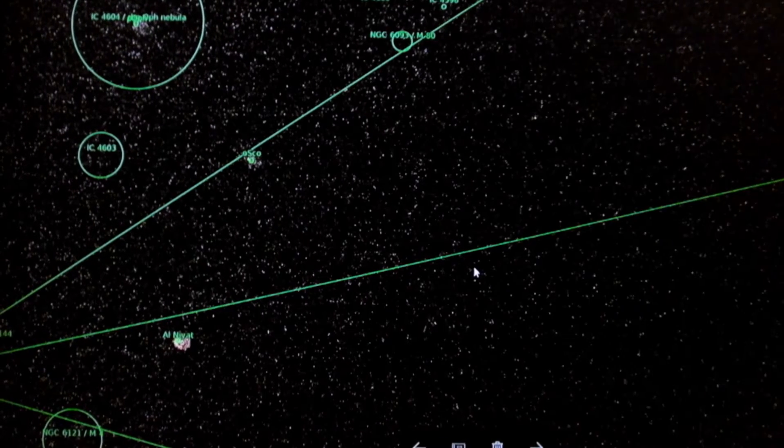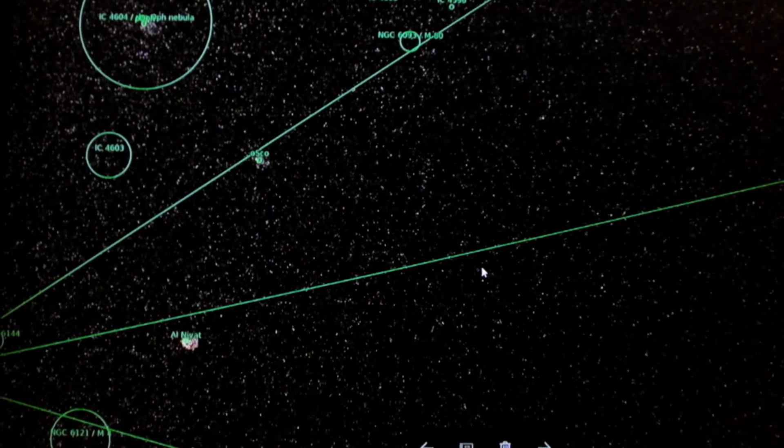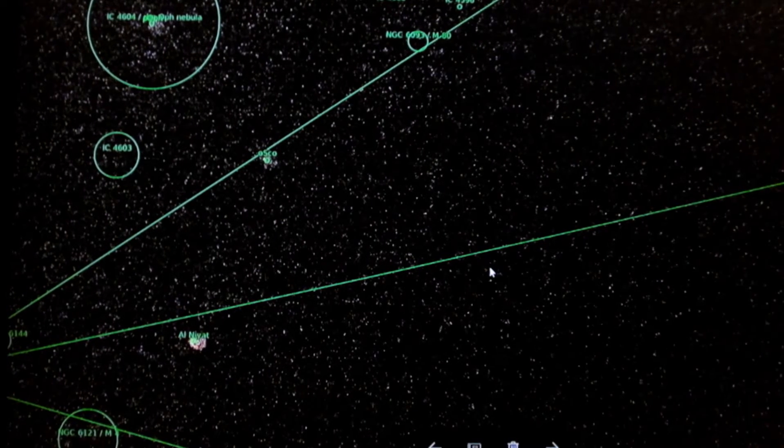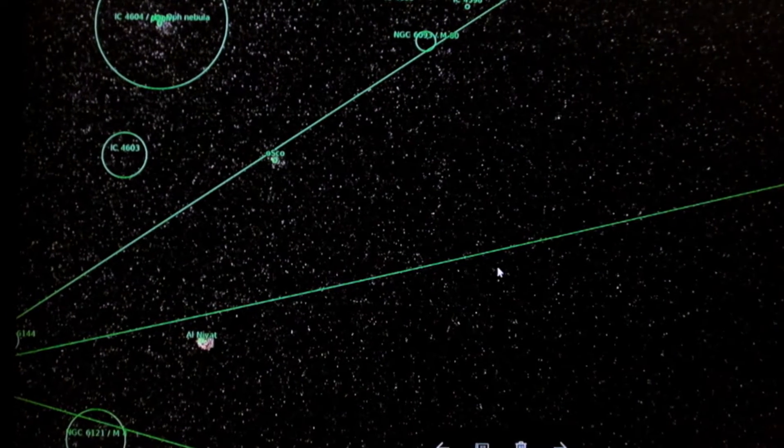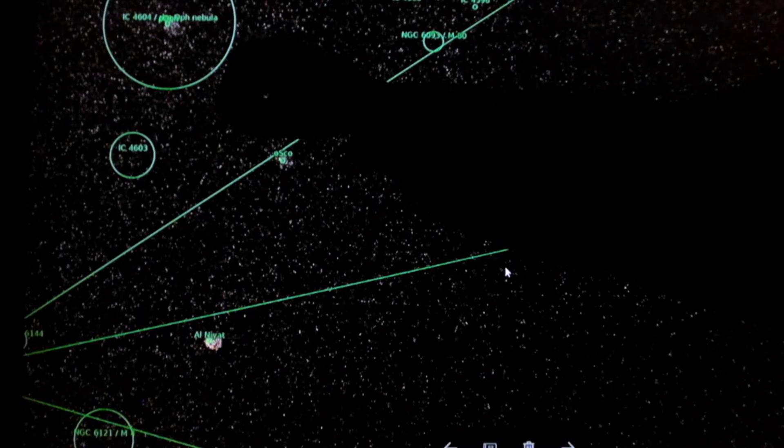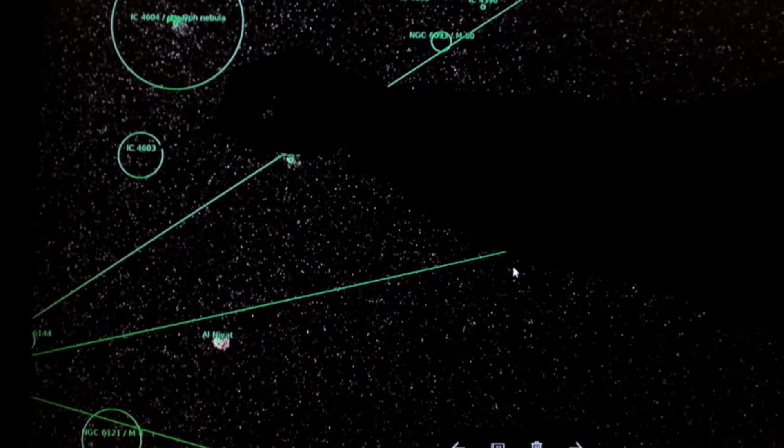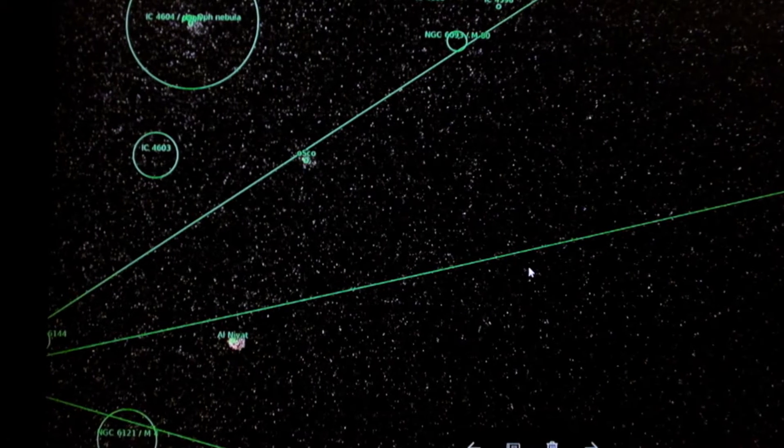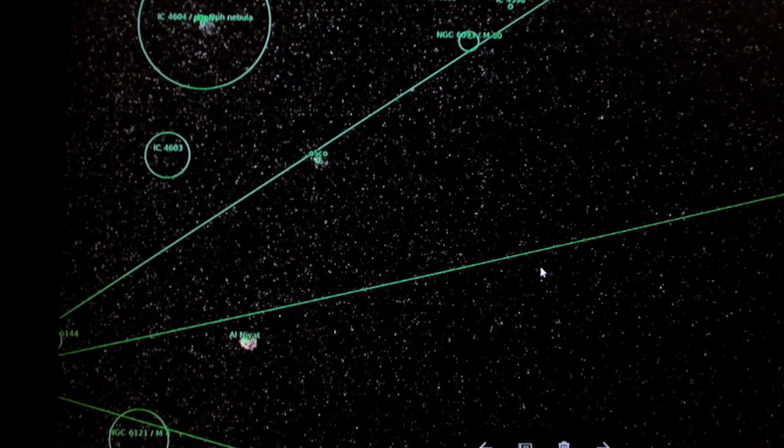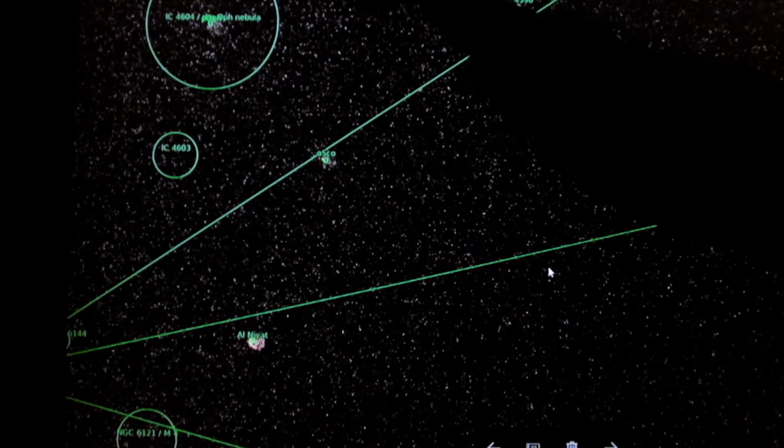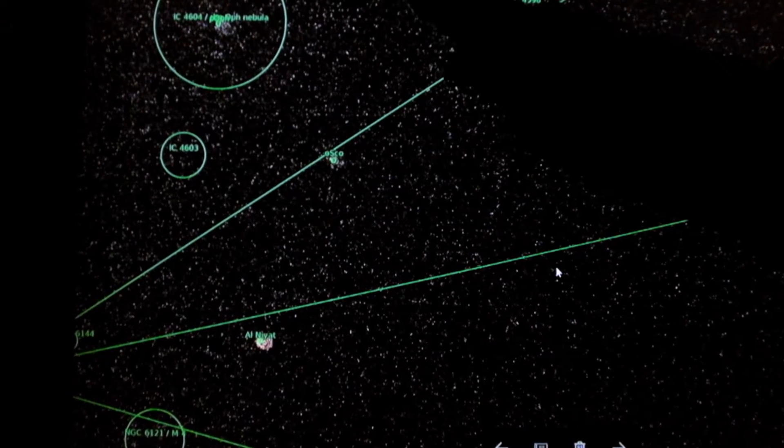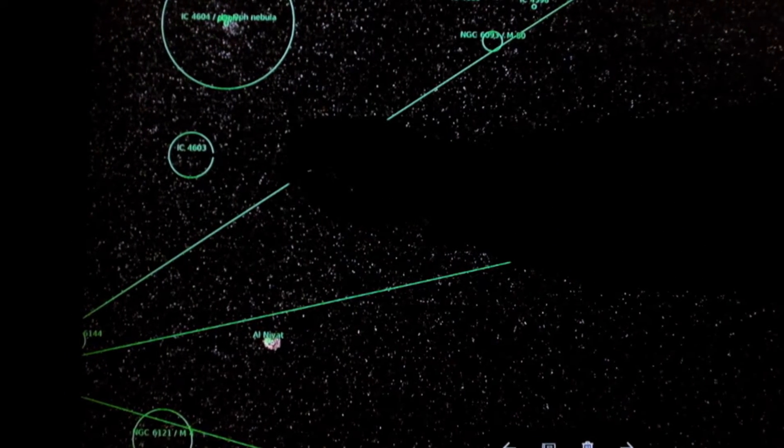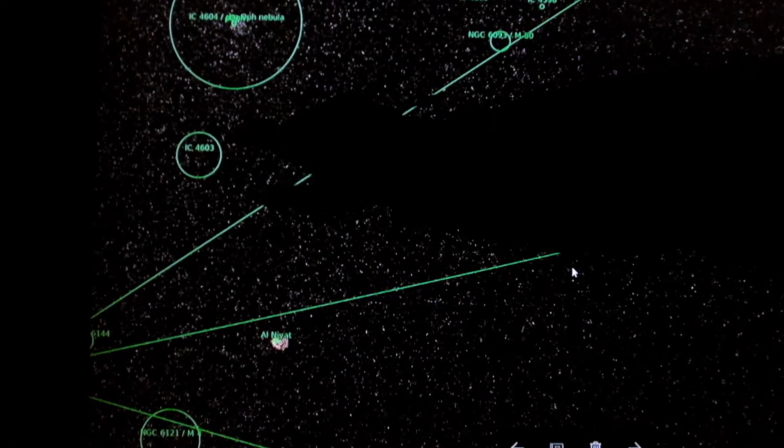I have in the photo M4, which is down here, also known as NGC 6121. So I have a photo of M4 and also IC 4603, the bright nebula RHO Ophiuchus complex. It's below the RHO Ophiuchus nebula. IC 4603 is right here in the complex.